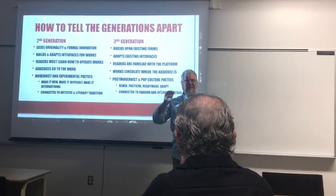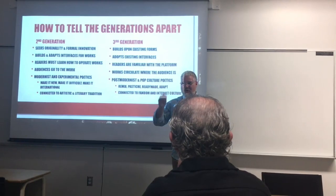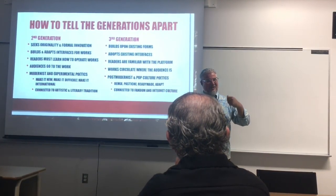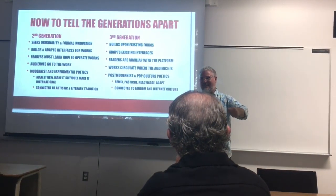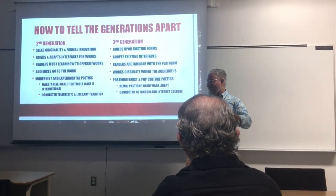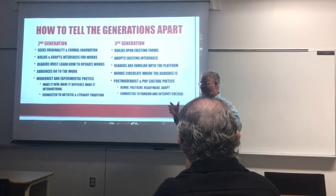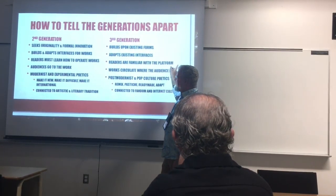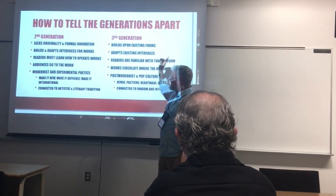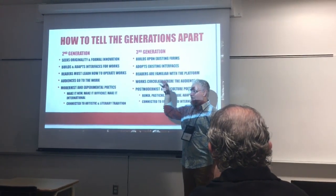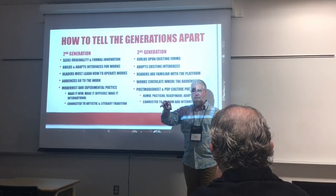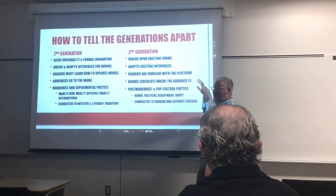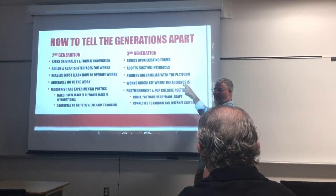In a lot of the criticism and books about electronic literature, there's all this 'here's how you read a work of e-lit, here's the attitude you need to have.' Here in third generation, readers are already familiar. In second gen, audiences go to the work — you build a website, people go to it. Here, works circulate where the audiences already are: Twitter, etc.